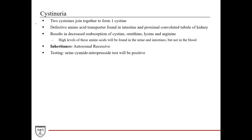Cystinuria and cystinosis don't necessarily involve methionine metabolism, but they are high-yield disorders you could see on exams involving amino acids. Two cysteines join together to form one cystine. Cystinuria is a result of a defective amino acid transporter found in the epithelium of the intestines and the proximal convoluted tubule of the kidney.